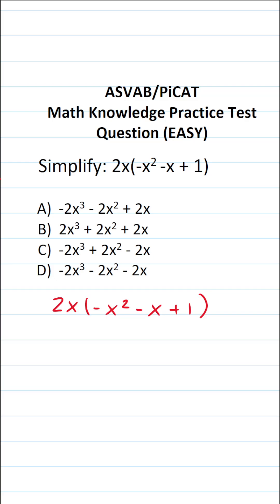To simplify this expression, we have to take this 2x and distribute it to each of these terms in parentheses via multiplication. And truthfully, you should be able to do this part mentally.